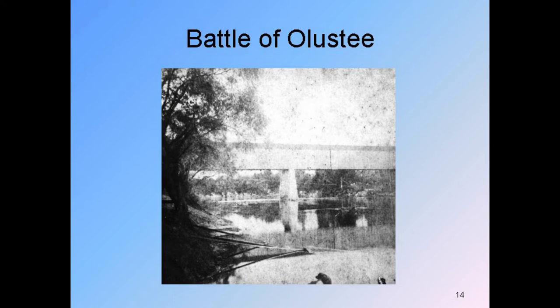Southerners call the battle Olustee; the North called it Ocean Pond — because the North named battles after the nearest body of water, while Southerners named them after the nearest community. The Confederates won. It was Florida's biggest Civil War battle, and with federal casualties of about 40%, it ranks as approximately the third-highest casualty rate of any major Civil War battle. The bridge over the Suwannee River was saved and kept supplying Confederate troops and food all the way to the end of the war. The Confederate earthworks built near the bridge as a final defensive position are still there, now part of Suwannee River State Park.